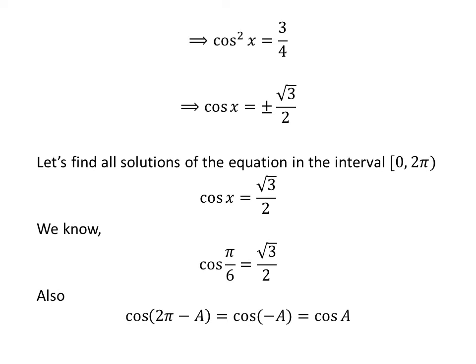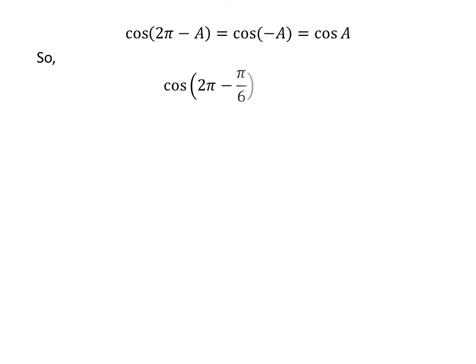The proof of this trigonometric identity is given in a linked video. Application of the above identity implies that cosine of 2 times pi minus pi upon 6 is equal to cosine of pi upon 6. As 2 times pi minus pi upon 6 is equal to 11 times pi upon 6, so cosine of 11 times pi upon 6 is equal to square root of 3 upon 2.